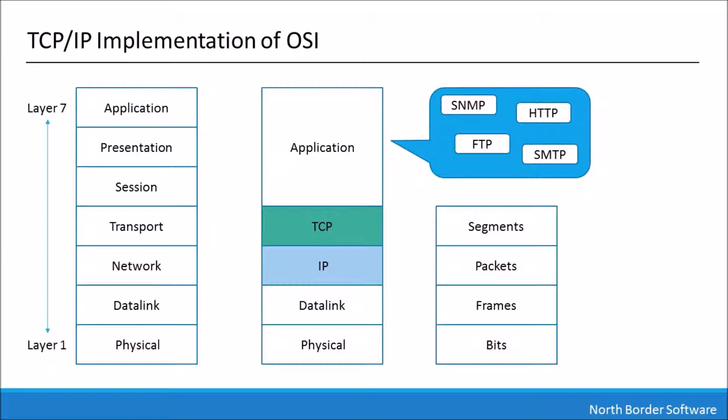Another noteworthy thing is the terminology we use. Anything progressing down or up the stack is referred to as a datagram, but we have more specific terms at each level. Anything at layer 4 is a segment, anything at layer 3 is a packet, anything at layer 2 is a frame, and at layer 1 it's referred to as physical bits on the wire.